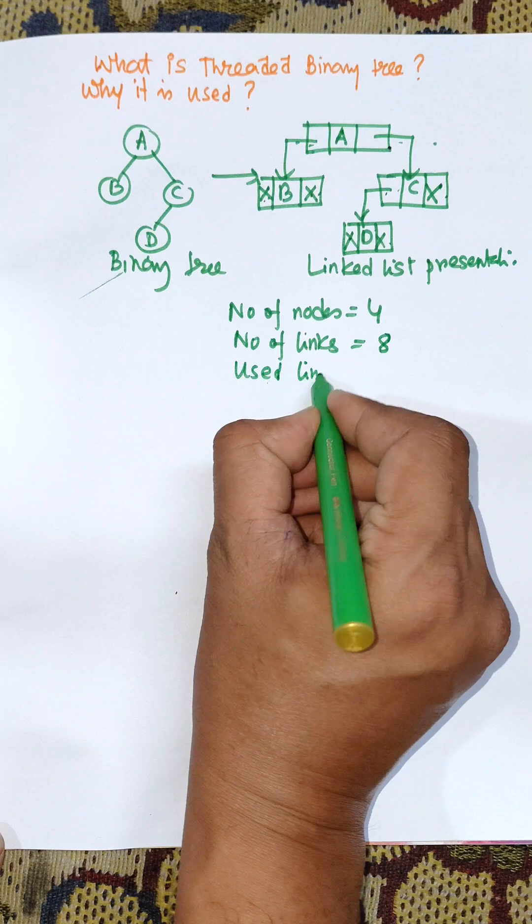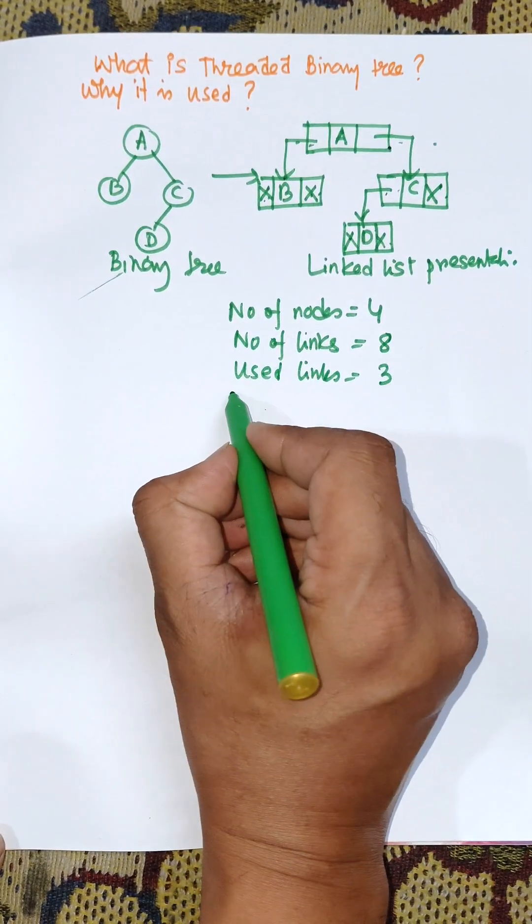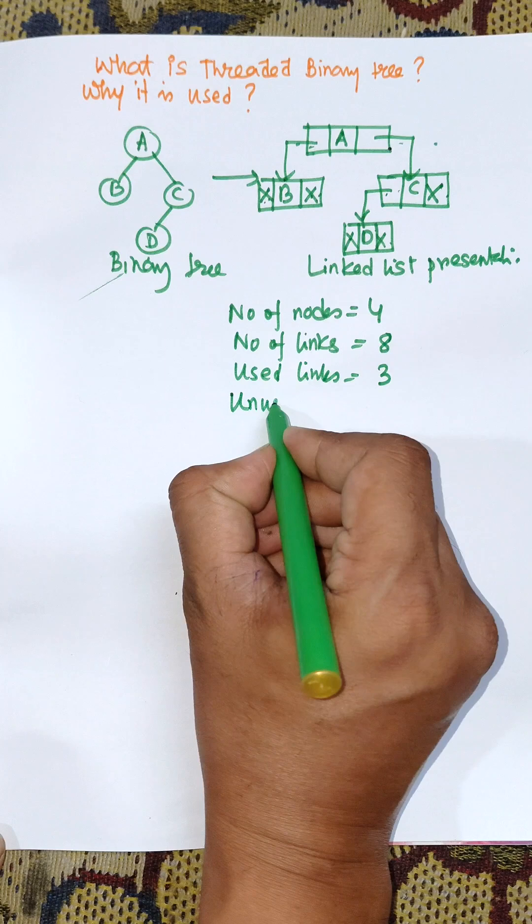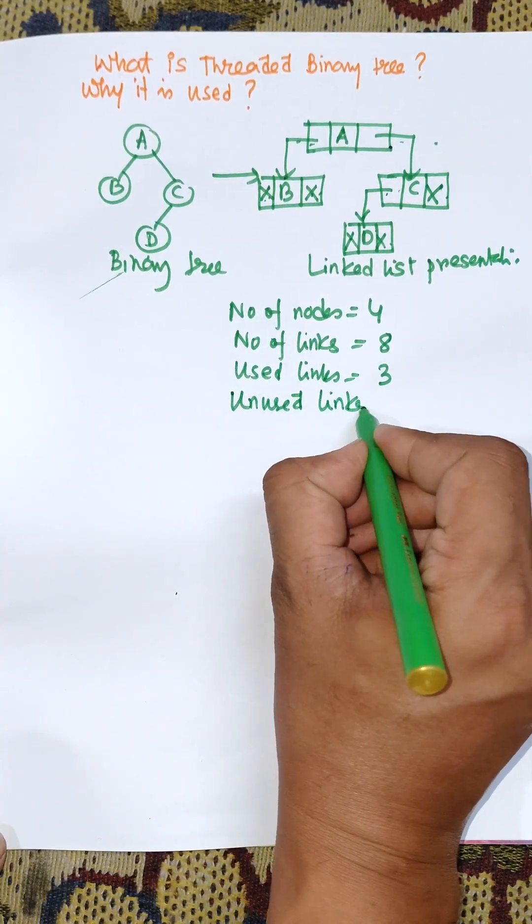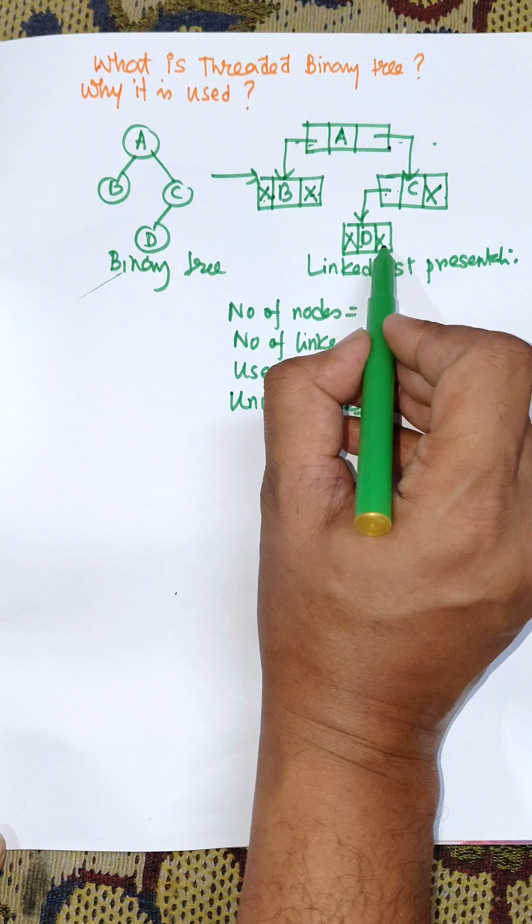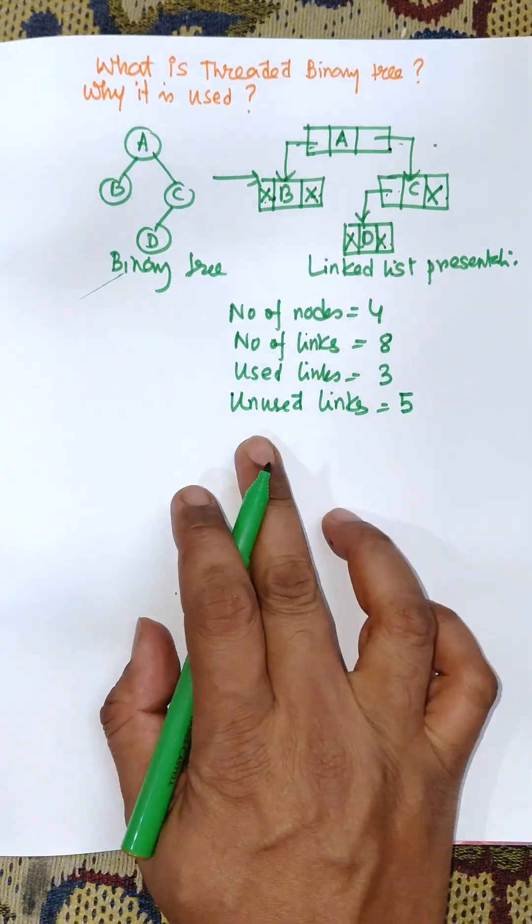Here used links equal to 3, which are the links that point to nodes. Unused links equal to 5, those pointing to null. That means half of the links are wastage.